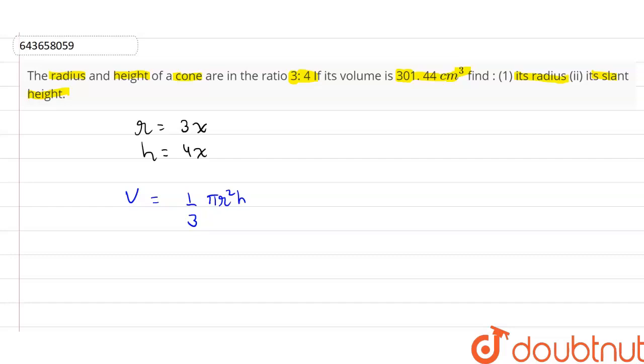we can find r and h. This implies that V, which is 301.44, equals (1/3)π × r². Now r² will be 9x², and 9x² into h, which is 4x.